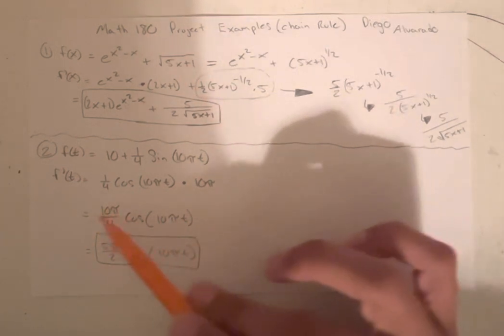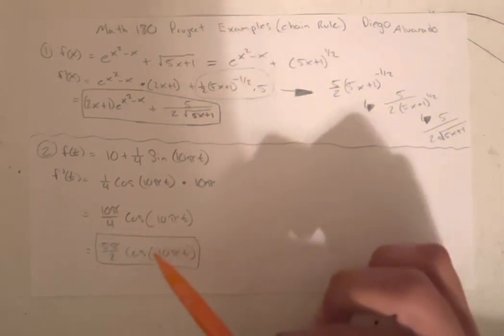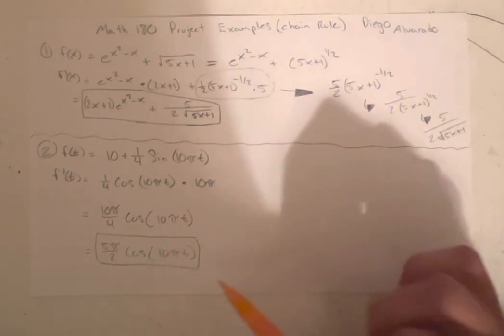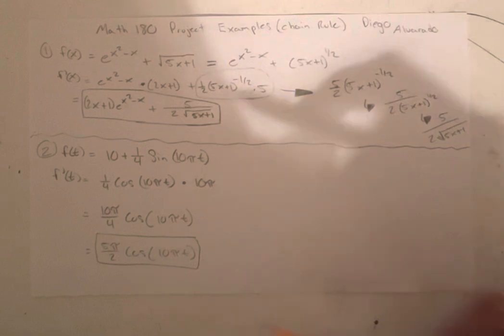And then you can simplify this to simpler, smaller numbers to 5 pi over 2 cosine 10 pi t. And that would be your answer. I hope this was helpful. If not, I'm sorry.